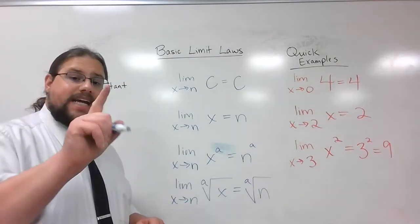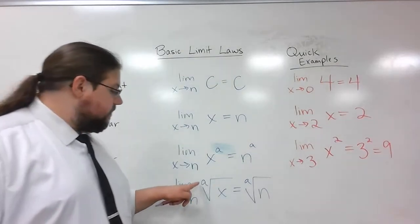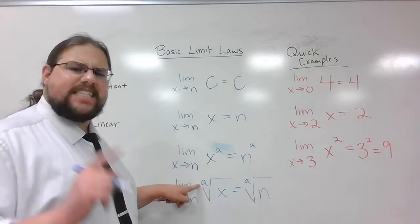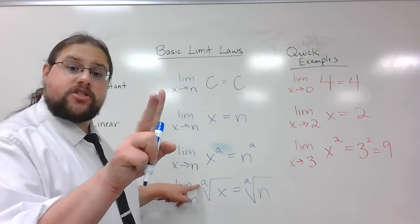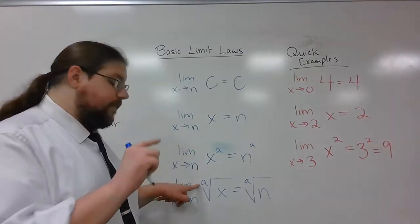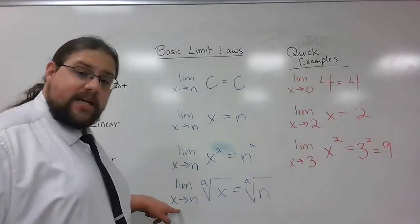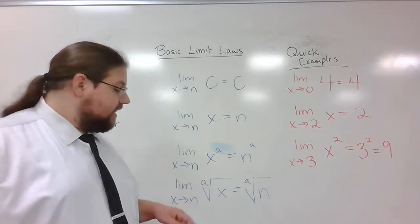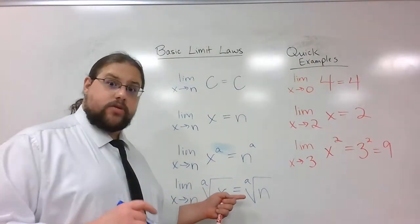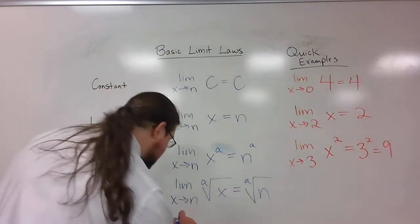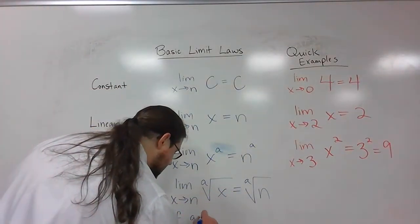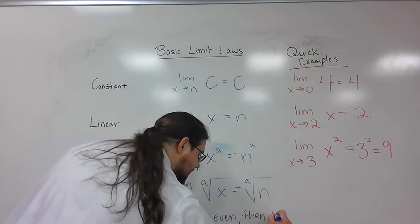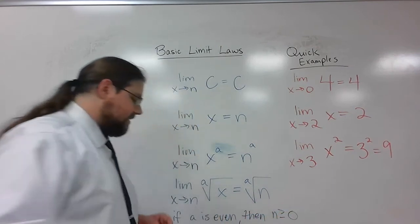Now, there is one caveat. If the index is an even number, like 2, n cannot be negative. Because remember, you cannot take the square root of a negative number. Let me repeat. If a is even, then n has to be bigger than 0.